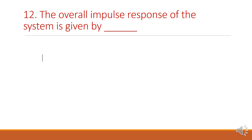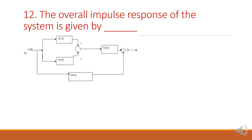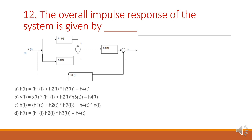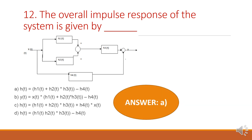Next question: find the overall impulse response H of t of a given system. H1 of t and H2 of t are in parallel, so add H1 of t plus H2 of t. Then that combination is in series with H3 of t, so take convolution with H3 of t. H4 of t is in parallel but with a subtraction symbol. Therefore H of t equals (H1 of t plus H2 of t) convolution with H3 of t minus H4 of t. The answer is option A.